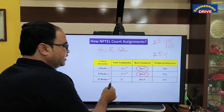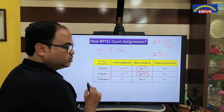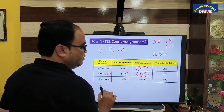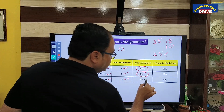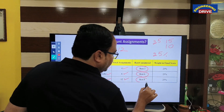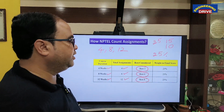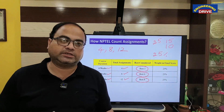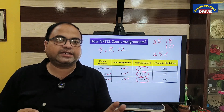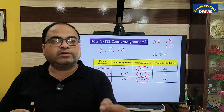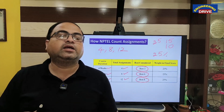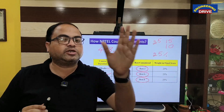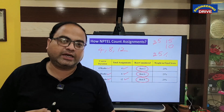Similarly, when discussing the 12-week course, you need to submit 12 assignments. Out of these 12 assignments, to calculate the final assignment marks, NPTEL will consider the best 8 assignments. The average of those 8 assignments will be taken as the final assignment marks, and that weightage is 25% of the final exam score.